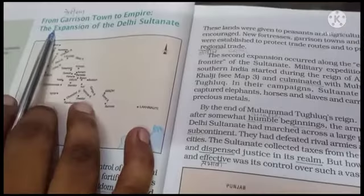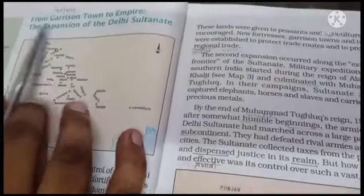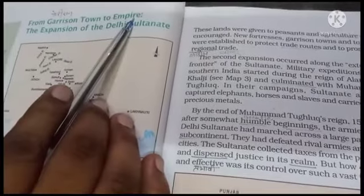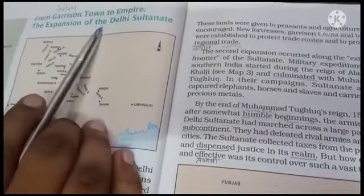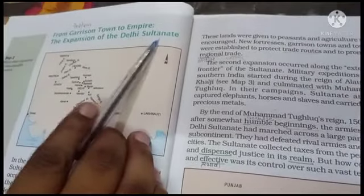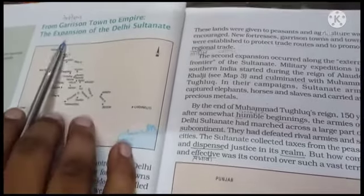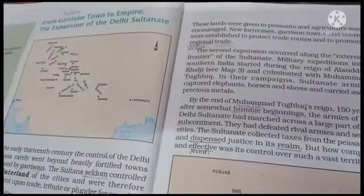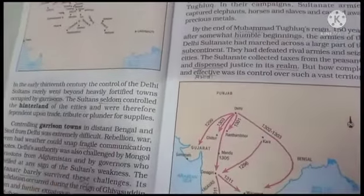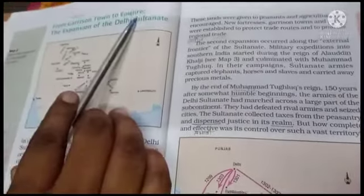We are on page number 34: 'From Garrison Town to Empire — the Expansion of the Delhi Sultanate.' The topic moves from garrison towns to empire. A garrison is a very significant type of fortified city, and empire refers to a much larger territorial expanse.